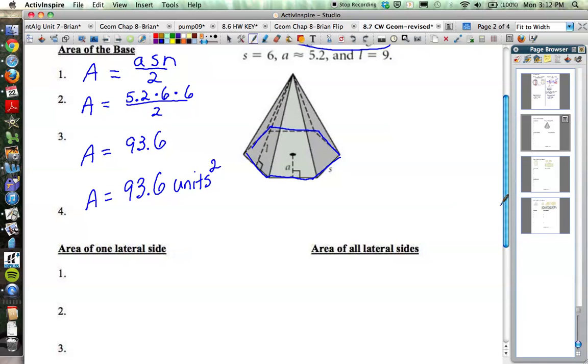Next thing we're going to do is get the area of one lateral side. When I say lateral side, we're talking about the triangular regions around the side. So maybe I'll just outline this one, for instance, right here.